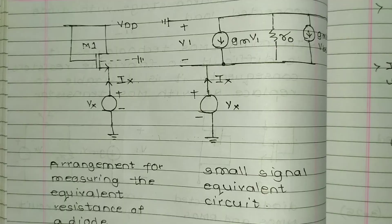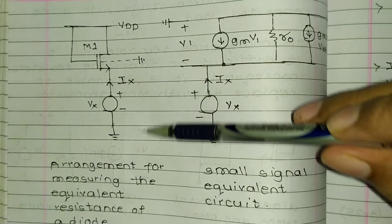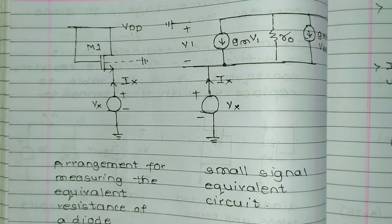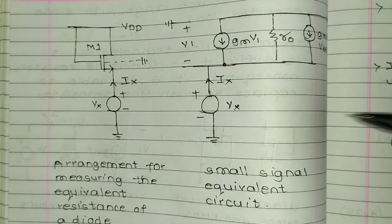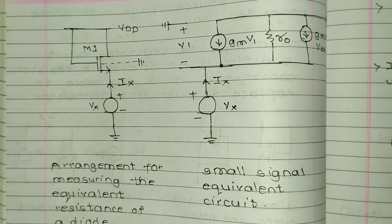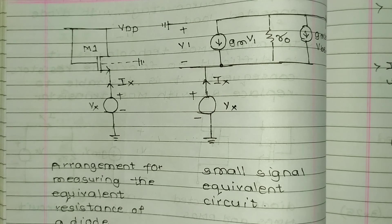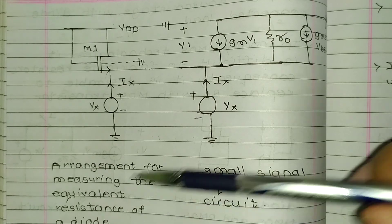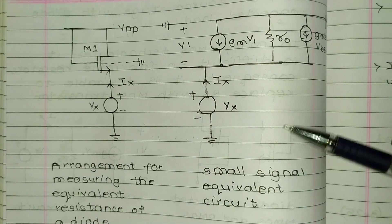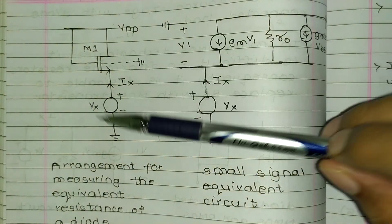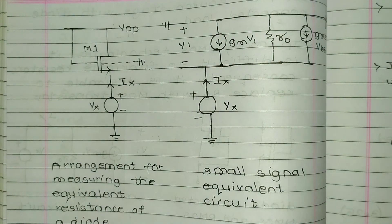This is the arrangement for measuring the equivalent resistance of a diode connected MOSFET, and this is its small signal equivalent circuit. Note that the transistor is always in saturation region because drain and gate have the same potential. These are two circuits: small signal equivalent and arrangement for equivalent resistance.